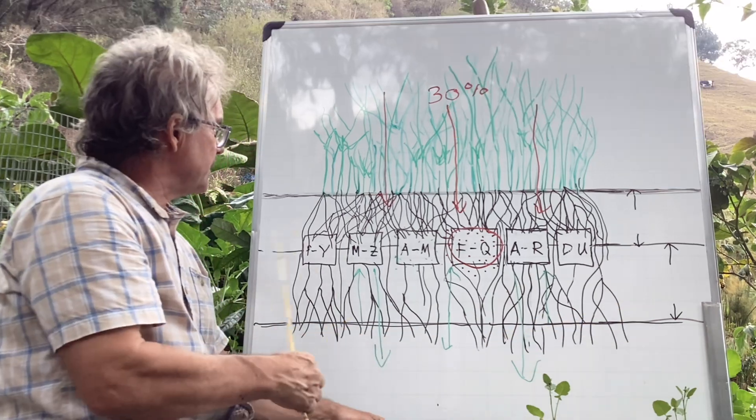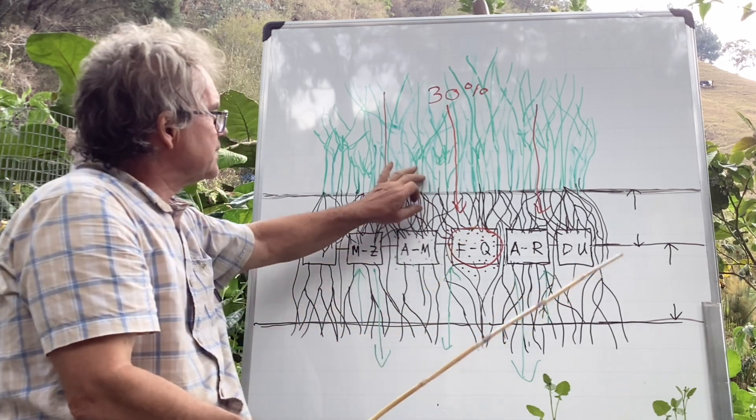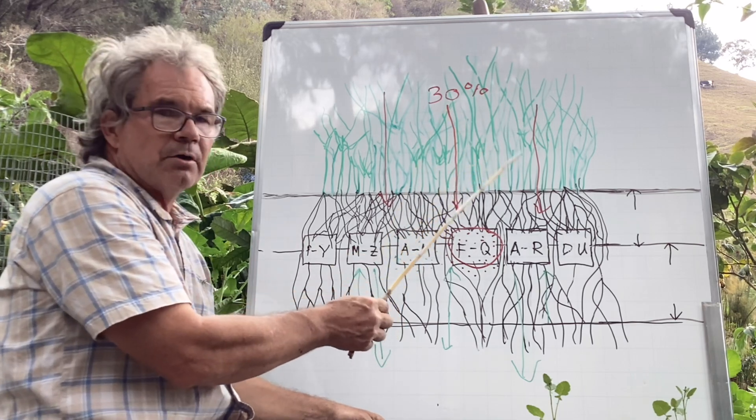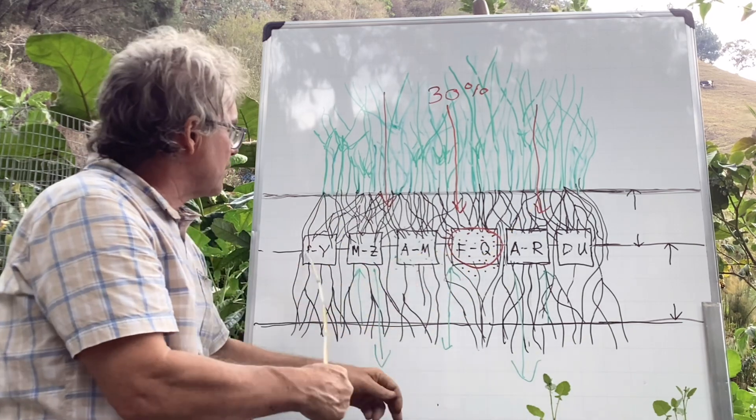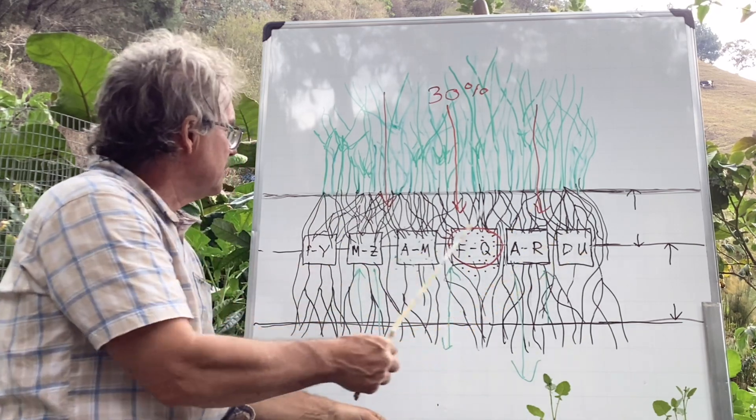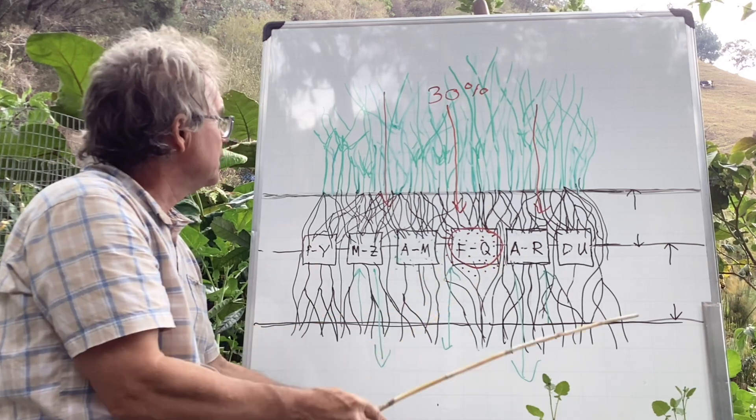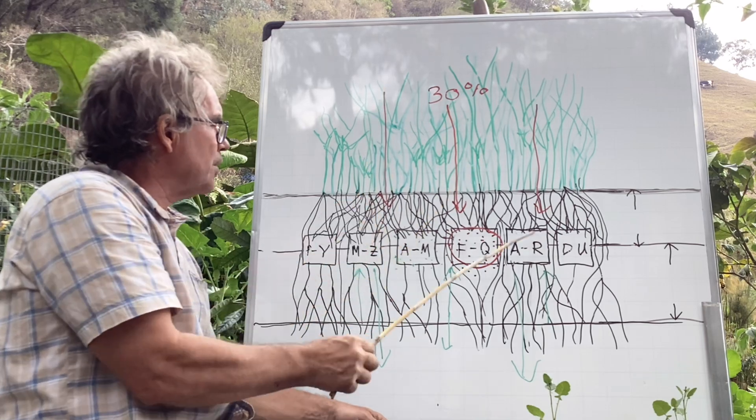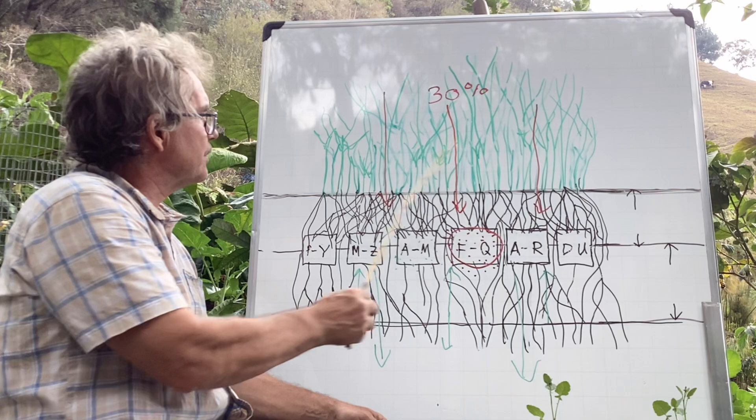So what happens is all this diversity feeds these plants in such a way that they have way more energy than a monoculture. If this was only one plant, let's say this was broccoli, this equation doesn't work as nicely. You would have to fertilize it and do many other things to get this result. So this idea of plant diversity charging this system of a battery is what the diversity does.